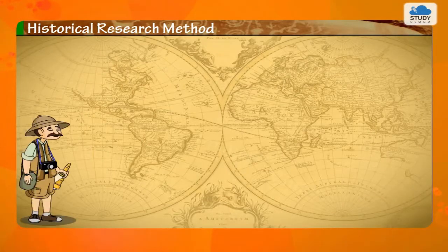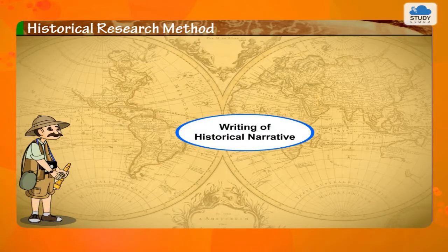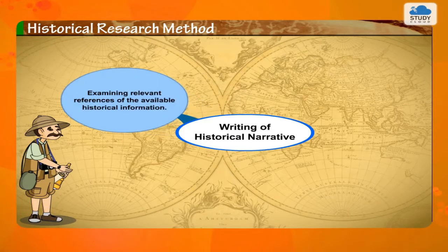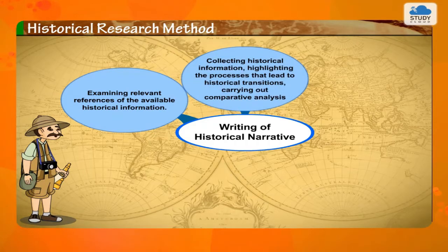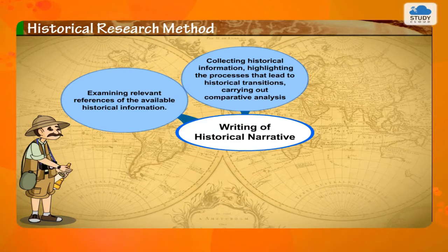Let us learn how historical research is written — the writing of historical narrative. This involves examining relevant references of available historical information, collecting historical information, highlighting the processes that led to historical transitions, and carrying out comparative analysis.